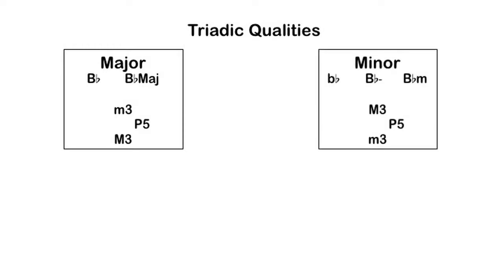Minor triads are often indicated either with a lowercase letter, an uppercase letter with the lowercase M afterwards, or an uppercase letter with a minus sign afterwards. Minor triads are constructed by placing a minor third between the root and the third, and a major third between the third and the fifth. You'll notice this is the opposite of the construction of a major triad.